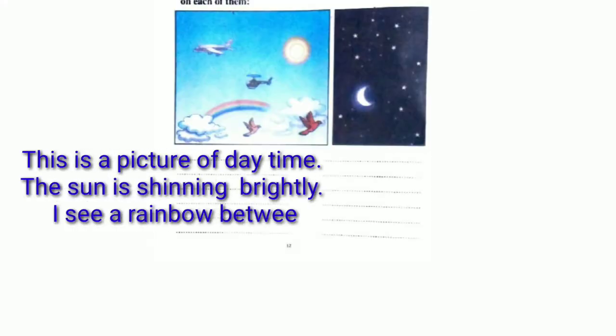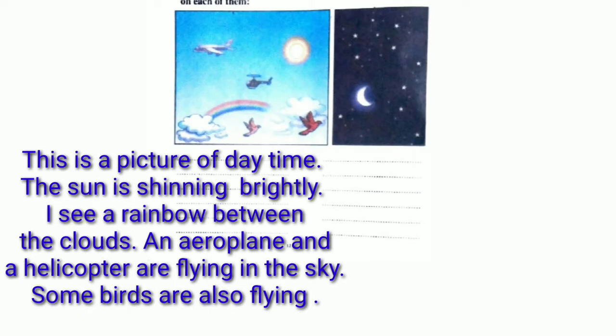Answer of Activity 6. This is a picture of daytime. The sun is shining brightly. I see a rainbow between the clouds. An aeroplane and a helicopter are flying in the sky. Some birds are also flying.